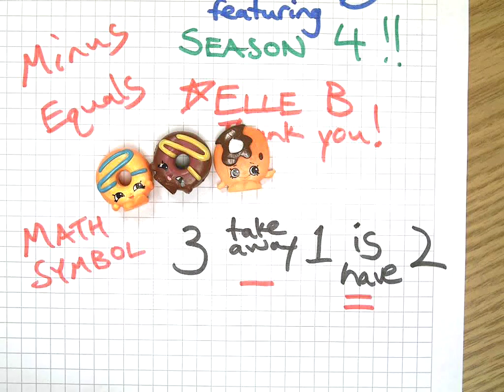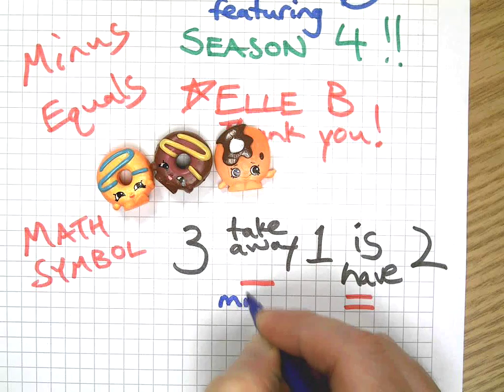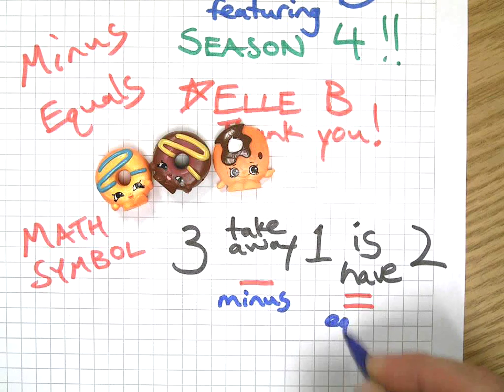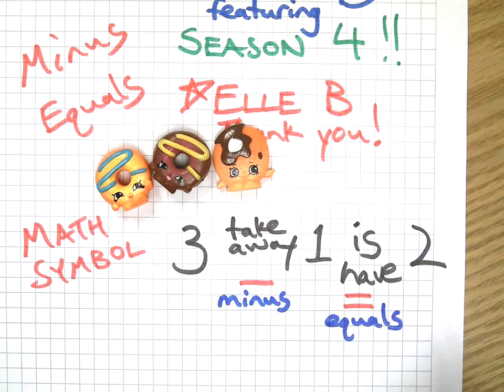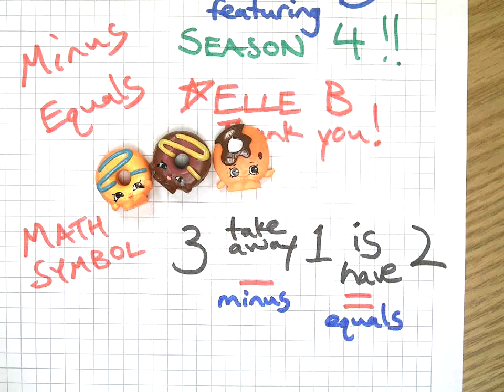And there's also a math symbol for 'is' or 'have,' and it looks like two of those. Okay, this one - Elle likes to call it the minus - and this one is the equals. And that's what we're talking about today. An equal sign is like two minus signs on top of each other. So let's do a little bit of practice with minus and equals.